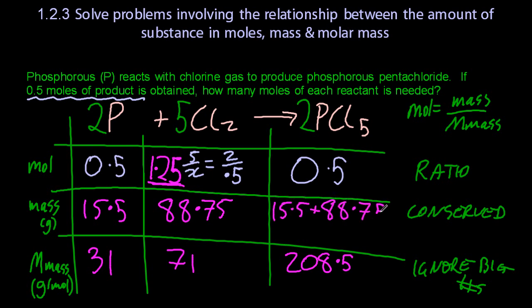I can add up the mass of the reactants to get the mass of the products, because mass is conserved. And I can double-check. Moles times molar mass is mass. So 0.5 times 208.5 is 104.25. Easy.